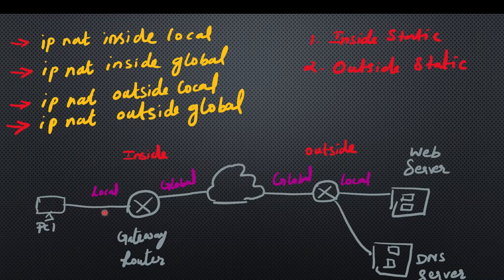You can see here there is a PC user. If you look at the inside IP, the inside IP is a private IP. You can see here 192.168.0.1 — that is the inside local IP. Inside GLOBAL is seen as a public IP, assigned by the service provider.